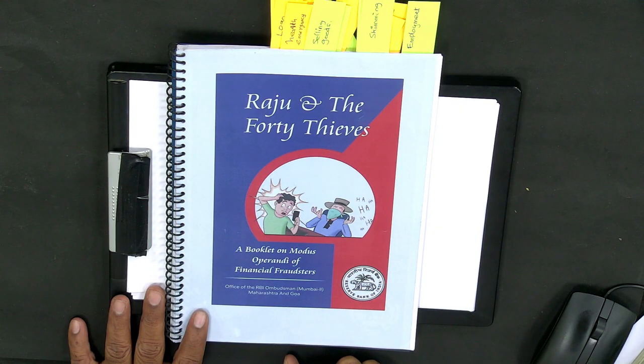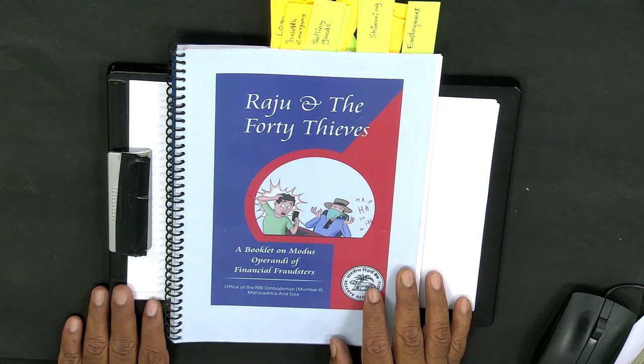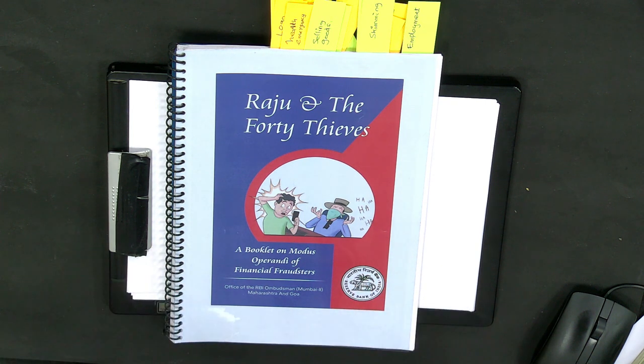RBI thought about many things, invited some experts, and came out with a comic book. The title is 'Raju and 40 Thieves' — you can see it on the screen. It was very recently released by the Reserve Bank of India. One of the offices of Reserve Bank of India is the Banking Ombudsman. If anybody has any grievances about a particular bank, they can write to the Ombudsman. The Reserve Bank of India headquarters is located in Mumbai, but the branches of the Ombudsman are available in every state.